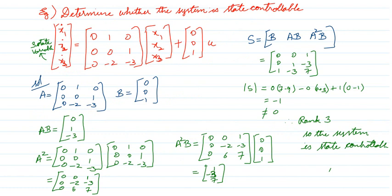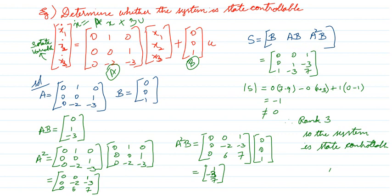Let us take a simple problem. A state equation is given and we are asked whether it is state controllable. This is your A matrix and this is your B matrix. The standard form is ẋ = AX + BU. How many state variables are there? Three state variables, so N = 3. The matrix becomes S = [B | AB | A²B]. We know what B is — fill it in as [0, 0, 1]ᵀ. Then find AB by multiplying A and B, and find A²B.